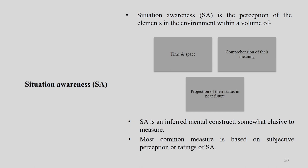Situation Awareness is a kind of perception — a perception of the elements in the environment. It is a perception present in the surrounding environment in three major areas: first is time and space, then is the comprehension of their meaning, and third is projection of their status in the near future. When we are actually perceiving elements of the environment within these three major domains, we call it Situation Awareness.